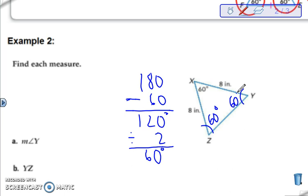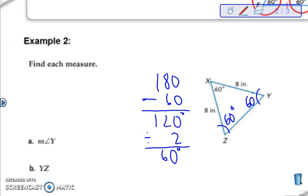So notice even though they didn't tell me it was an equilateral triangle I pretty much now confirmed it because I got the same three values for all three angles. What's that measure Y then? 60 degrees.